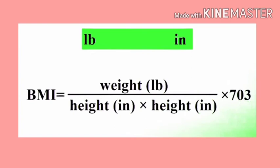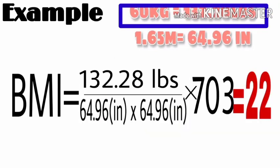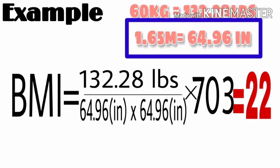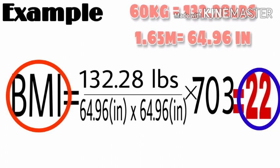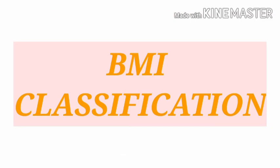Using pounds and inches, the result is multiplied by 703. For example, 60 kg equals 132.28 pounds and 1.65 m equals 64.96 inches. 132.28 ÷ (64.96)² × 703 gives a BMI of 22 — the same result as the kilogram and meter calculation.